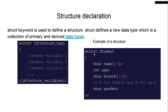For example, you write `struct student`, then inside curly braces you declare variables of different data types. You open the curly braces, declare all members, close the curly braces with a semicolon — that completes the structure definition. But you still need to declare a variable for it.